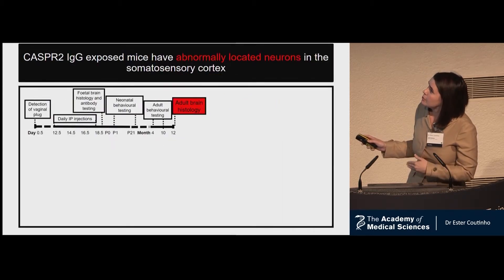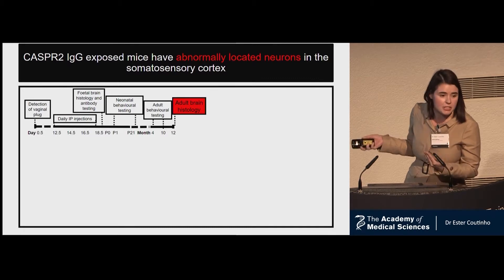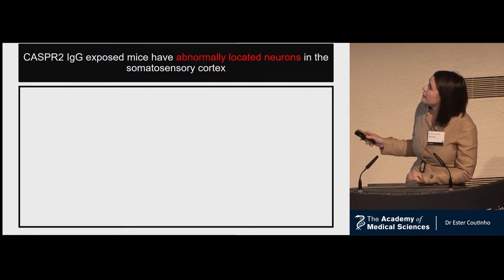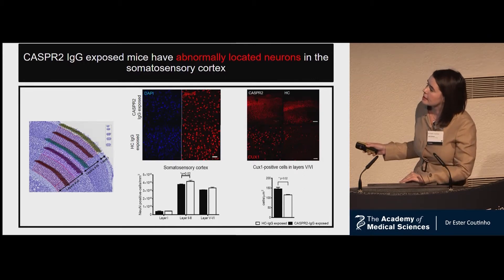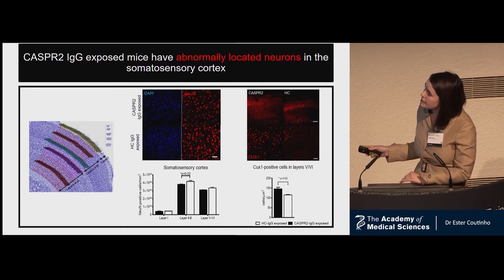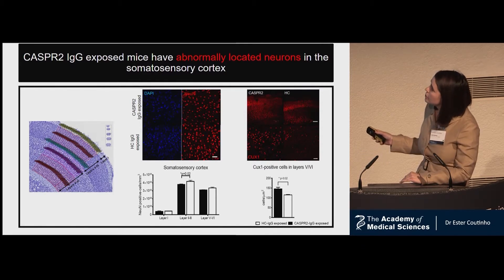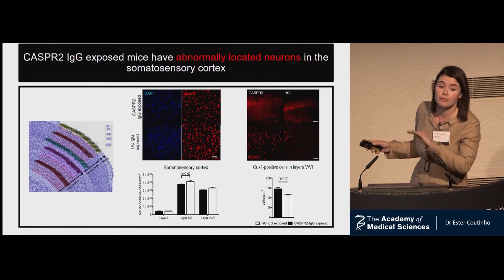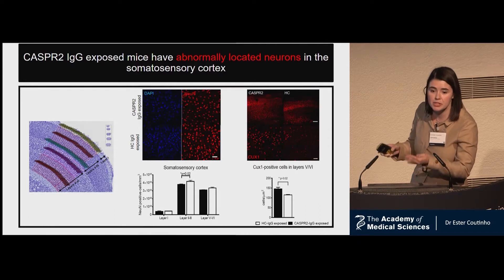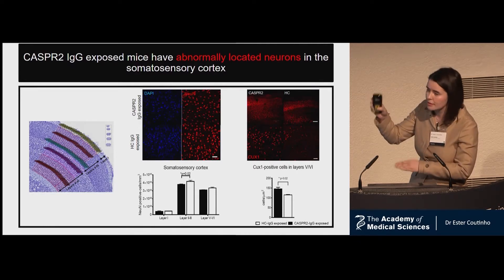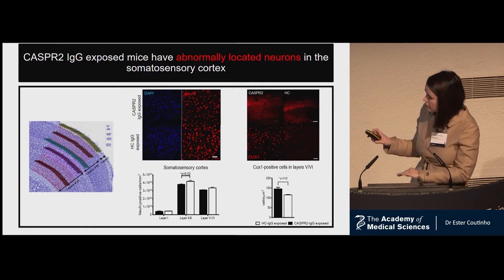We wanted to see whether there were permanent changes in neuropathology. In the somatosensory cortex, there was a slight decrease in neuronal density in the upper layers. When we quantified CUX1-positive neurons — a marker of upper-layer neurons — CASPR2 IgG-exposed mice had more of these neurons in the deeper layers, perhaps suggesting that some neurons had not reached their final destination in the cortical structure.